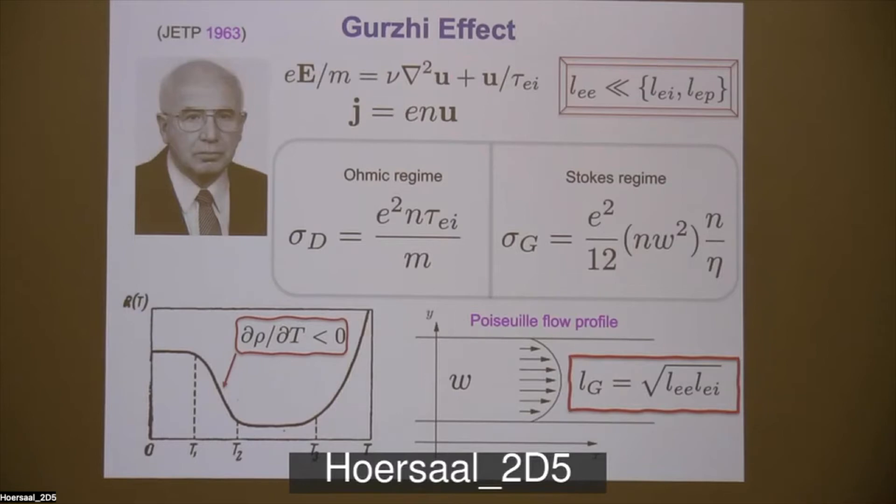So he started with kinetic theory, projected collision integrals, did some arithmetics, and arrived to this equation of motion, which is very simple, just a Newtonian law that tells you the driving forces in a steady state are compensated by viscous stresses and residual friction due to impurities. So he still considered some residual disorder in the system. Nu here is a kinematic viscosity, which is a shear viscosity per mass density, and the current is related to hydrodynamic velocity U.